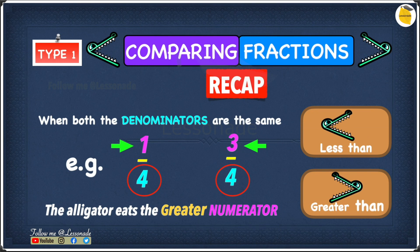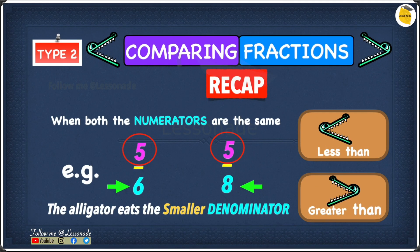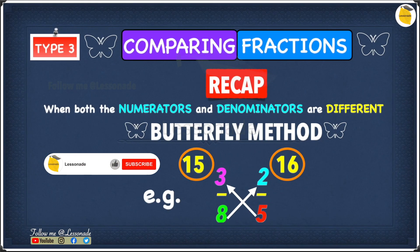Quick recap: when both denominators are the same — both numbers on the bottom are the same, like two fours — the alligator eats the greater numerator. The numerator is the number at the top, so out of one and three the greater is three. Therefore one over four is less than three over four. When both numerators are the same — like two fives — the alligator eats the smaller denominator. Out of eight and six, six is smaller, so five over six is greater than five over eight.